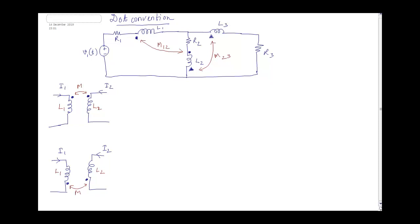Here we have shown dots which are in the shape of circles or triangles. A pair of the same figures forms a couple — so the two triangles form a couple with mutual inductance M23, and the two circles are coupled together with mutual inductance M12.